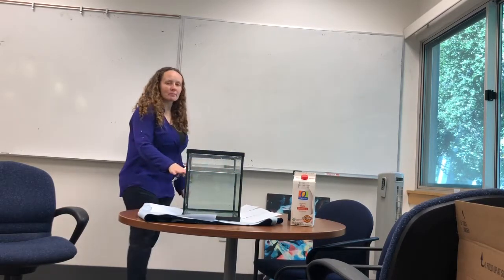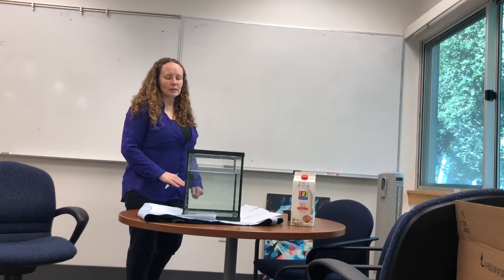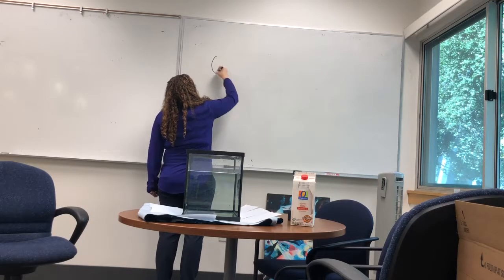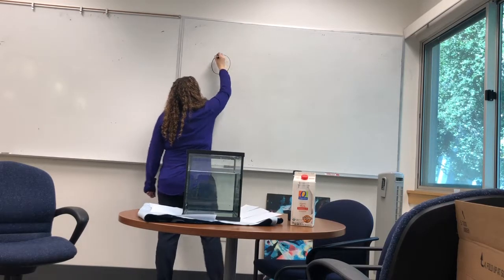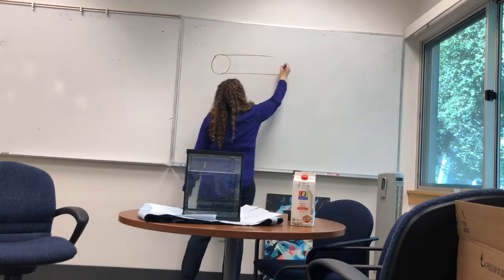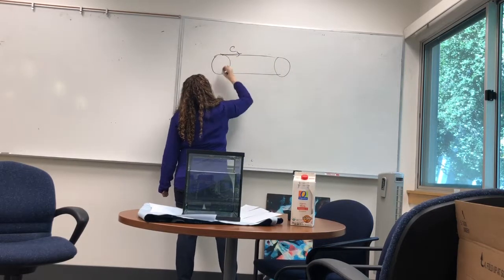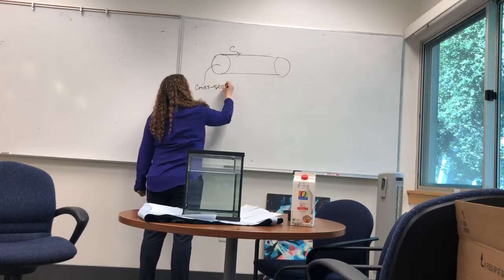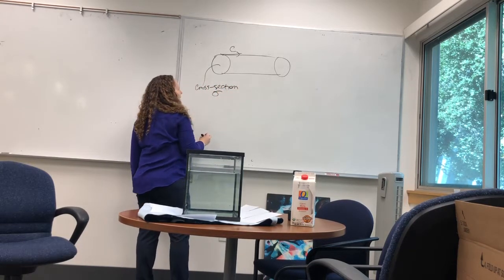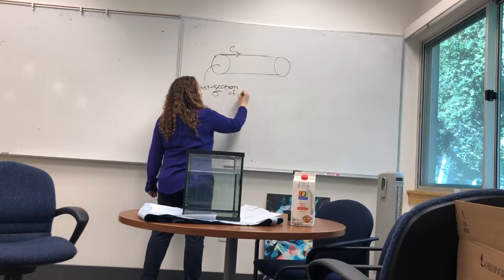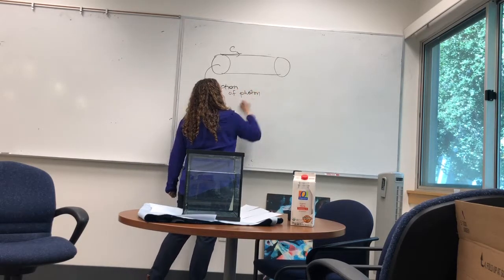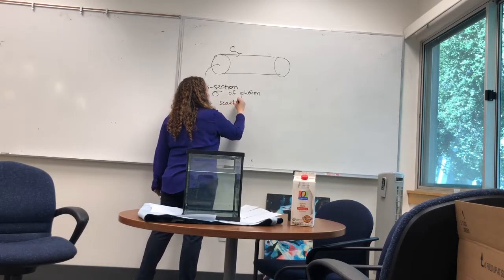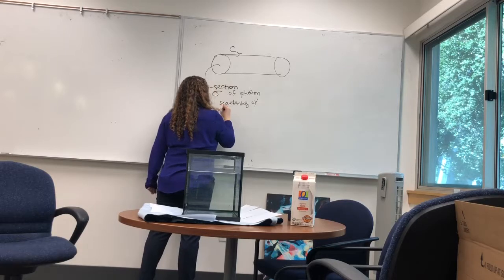So in other words we want the optical depth of this tank to be close to one. Let's think about a photon that's coming in — it's going through the tank at the speed of light. Here's the cross-section sigma of the photon for scattering with the milk droplet.